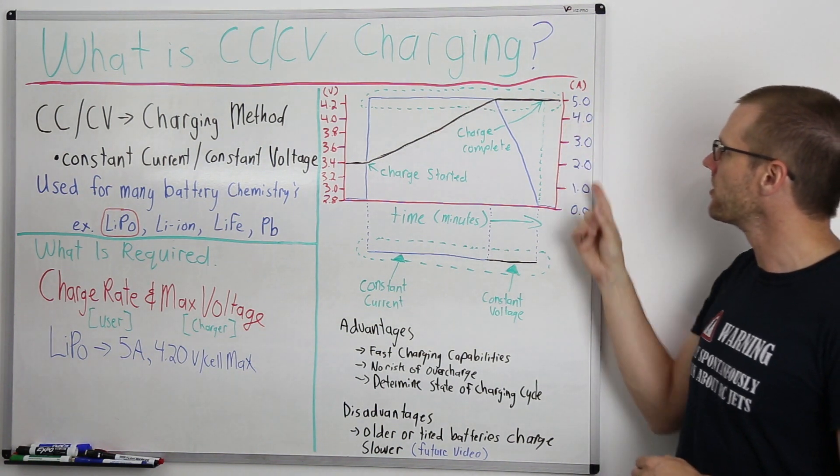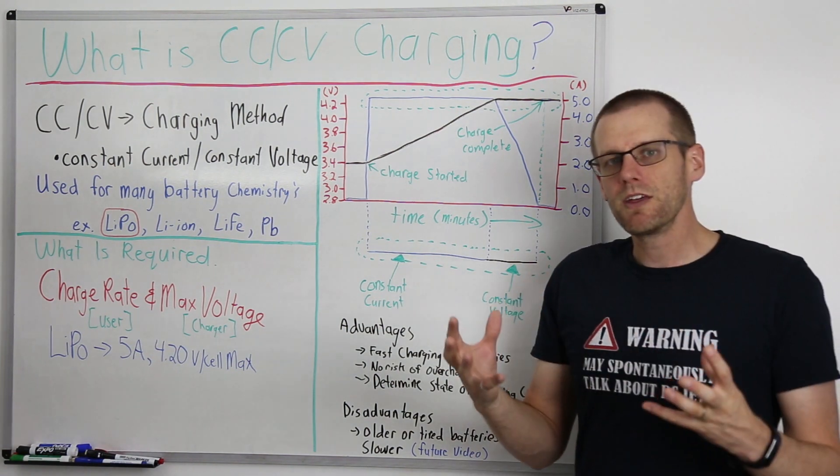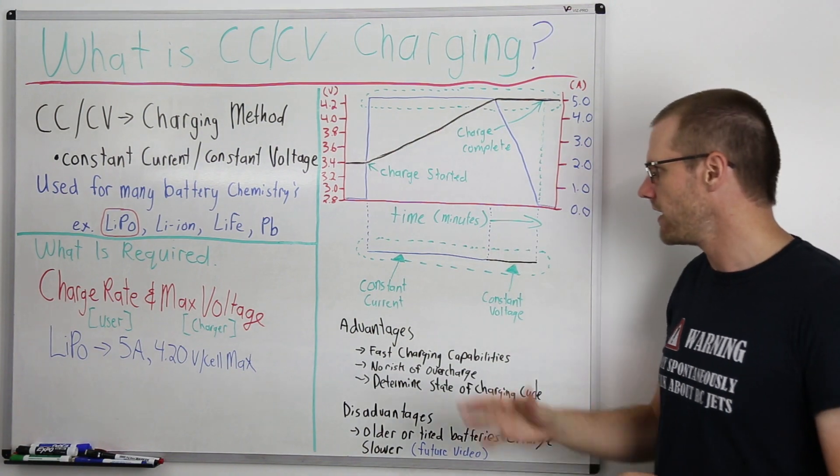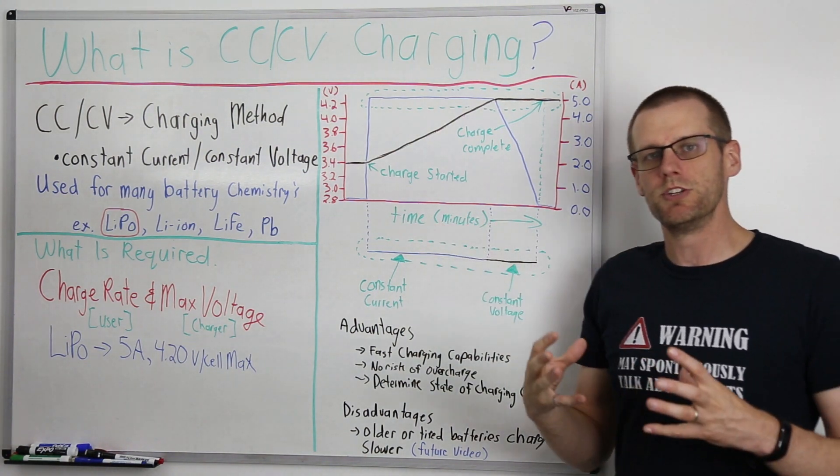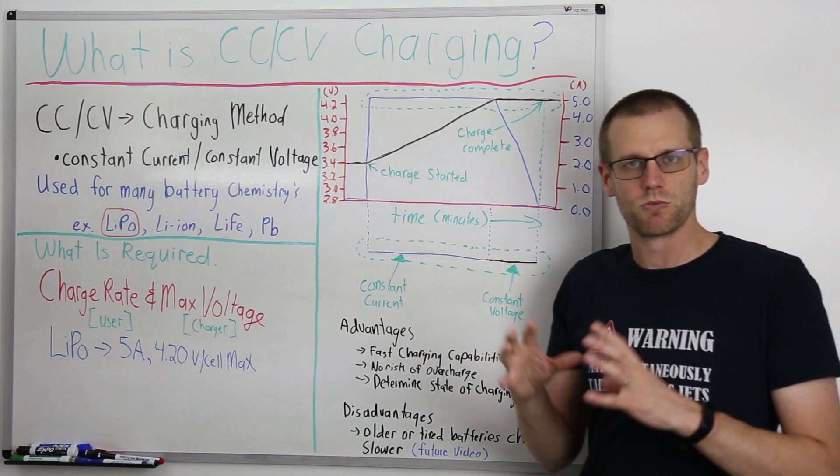So now let's take a look at the right hand Y axis. This is going to be where we have current being represented and I've drawn this in blue. Now that we have both of our Y axis defined and we understand the units we're dealing with there, our X axis is simply just time. Over a period of time, this could be minutes, seconds, hours, whatever you want.